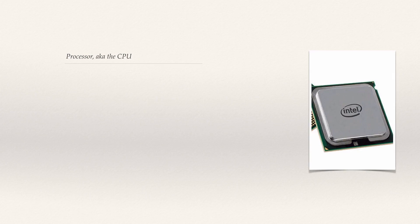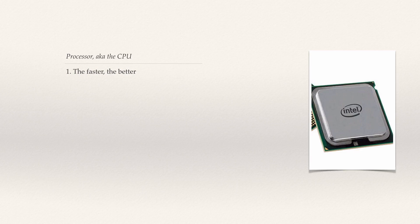First, we'll talk about the processor, or the CPU. The processor, otherwise known as a CPU or central processing unit, is basically the brain of your computer. Generally speaking, the faster the processor, the quicker your computer will be. Everything you want your computer to do will be interpreted and executed by your CPU. In the same way, the more you spend on your processor, the better performance you will get.